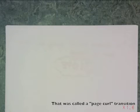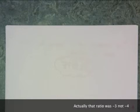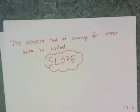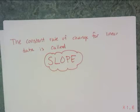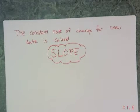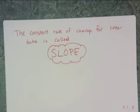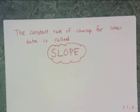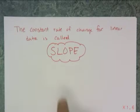That negative 4 we found as the ratio for the last table of data is a special number called slope. Here's the big idea for rates of change: linear data has a constant rate of change, and because that rate of change is constant, we give it a name — it's called slope.